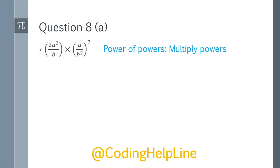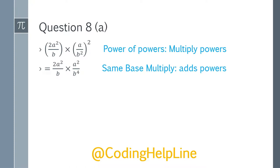Question 8a: (2a^2/b) multiplied by (a/b^2)^2. Apply power of power: (a/b^2)^2 = a^2/b^4. Multiply: 2 × a^(2+2) = 2a^4 and b^(1+4) = b^5. Answer is 2a^4/b^5.